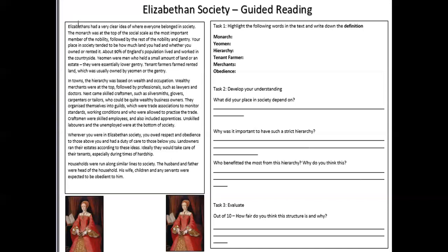Here's your task: highlight the following words in the text and write down the definition — monarch, yeoman, hierarchy, tenant farmer, merchants, and obedience. Then for developing your understanding: what did your place in society depend on? Why was it important to have a strict hierarchy? Who benefited most from this hierarchy and why? Out of ten, how fair do you think this structure is and why? Give yourself six or seven minutes for this task, write it on paper, pause the video, and then we can move on.